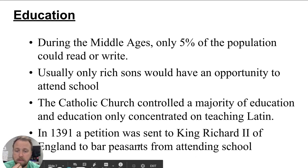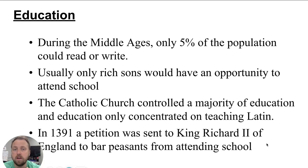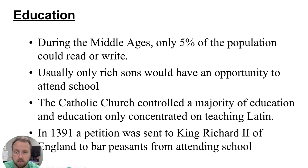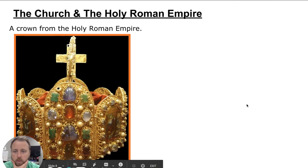Italians spoke Italian, French people spoke French, Germans spoke German — Latin was the language only the educated class knew. In 1391, a petition was sent to King Richard II of England to bar peasants from attending school. This is very significant: toward the end of the medieval period, peasants were trying to go to school and the government was holding them back — because they wanted to control them and not give them power.